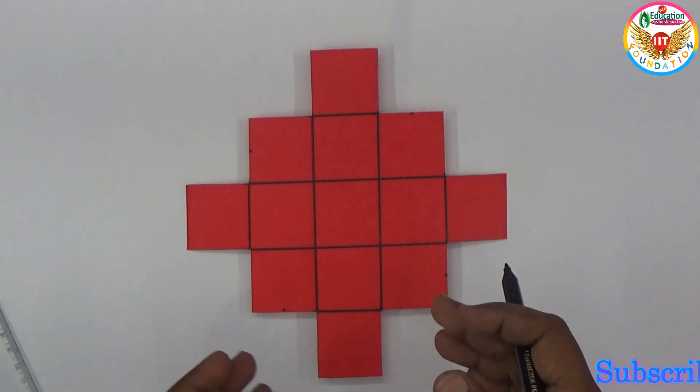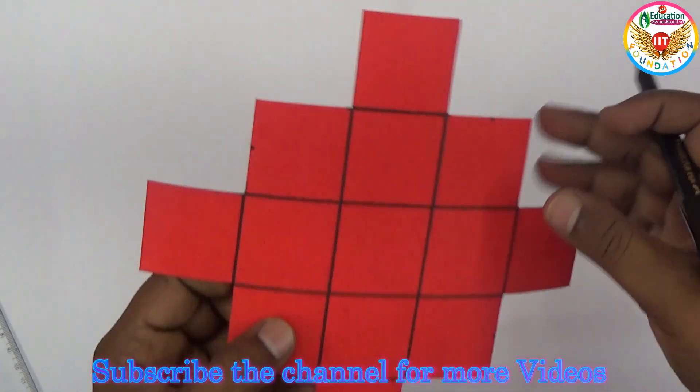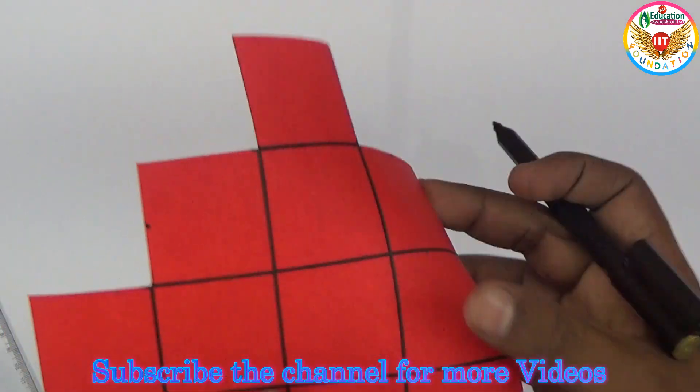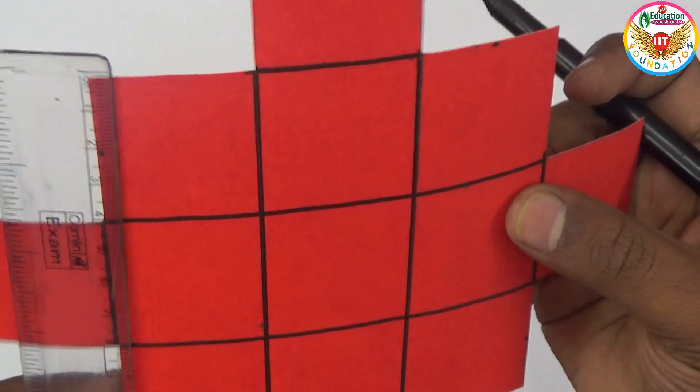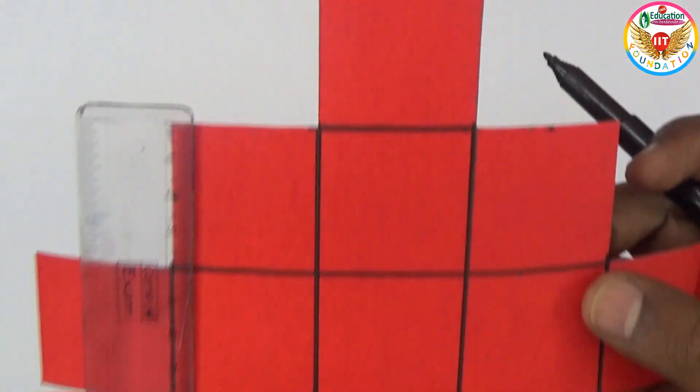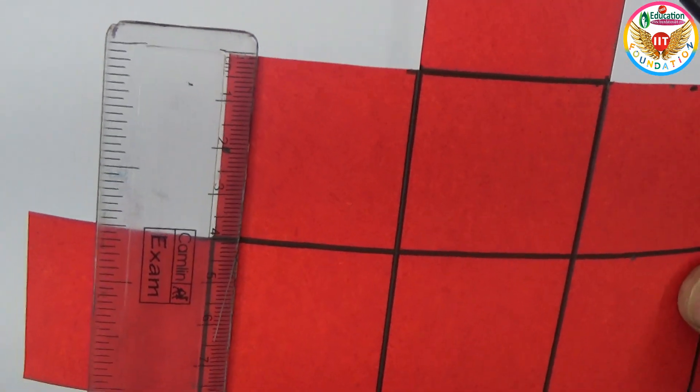Ok now I will show the solution here. So just exactly if you observe, I have taken every side exactly equal to 4 centimeters. So you can take how much you want, but I took exactly 4.